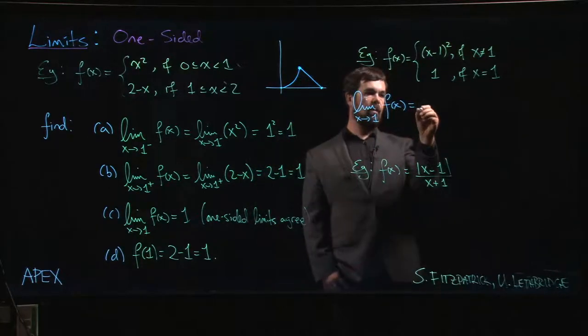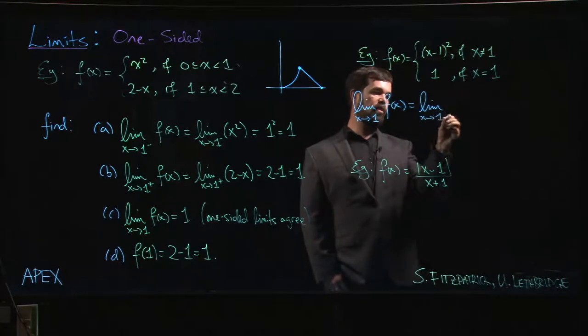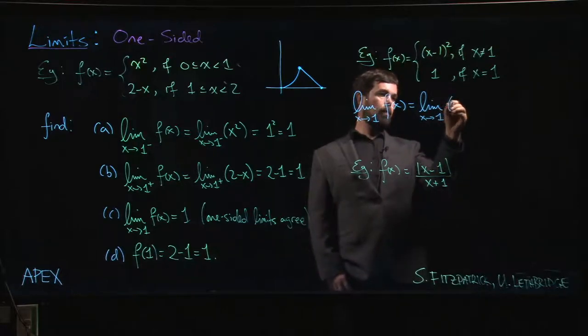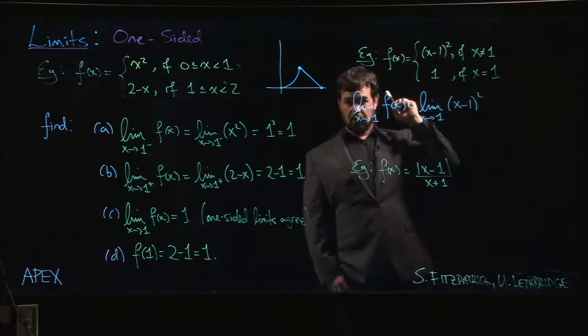The limit as x approaches 1 of f of x. Remember that in the definition of the limit we're allowing x to be close to 1, but we don't actually allow x to equal 1. Since we're not actually allowing x to be equal to 1, that means we should use the top expression for f of x.